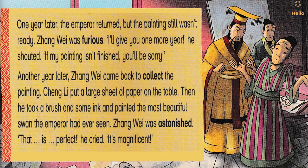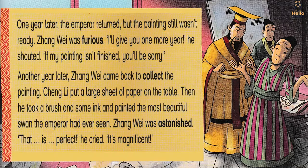Another year later, Zhang Wei came back to collect the painting. Cheng Li put a large sheet of paper on the table, then he took a brush and some ink and painted the most beautiful swan the emperor had ever seen. Zhang Wei was astonished.